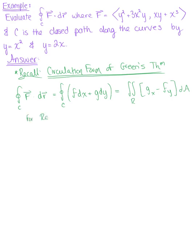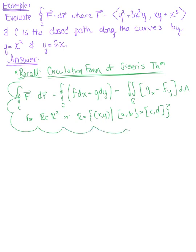This applies to a two-dimensional region R defined as the set of all ordered pairs XY, where X is between A and B and Y is between C and D, where A, B, C, and D are all real numbers. It's also worth noting that polar coordinates are a valid option for defining this region as well.